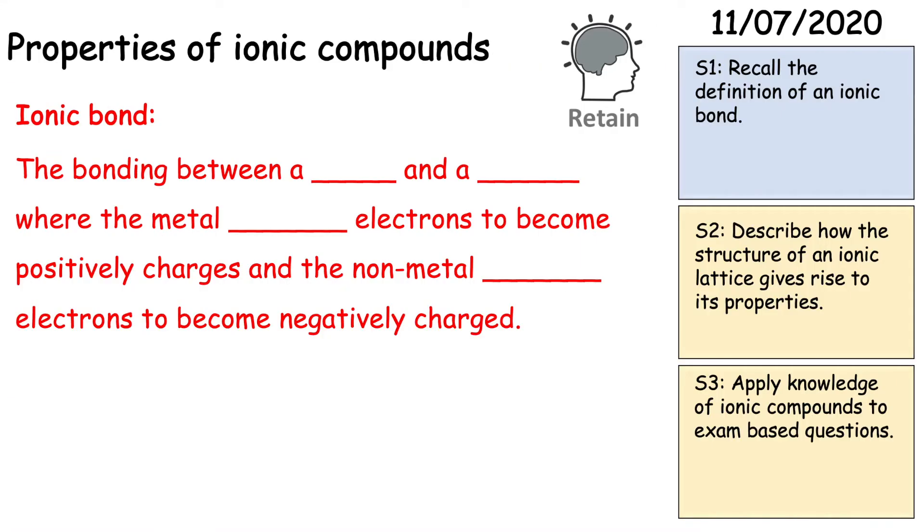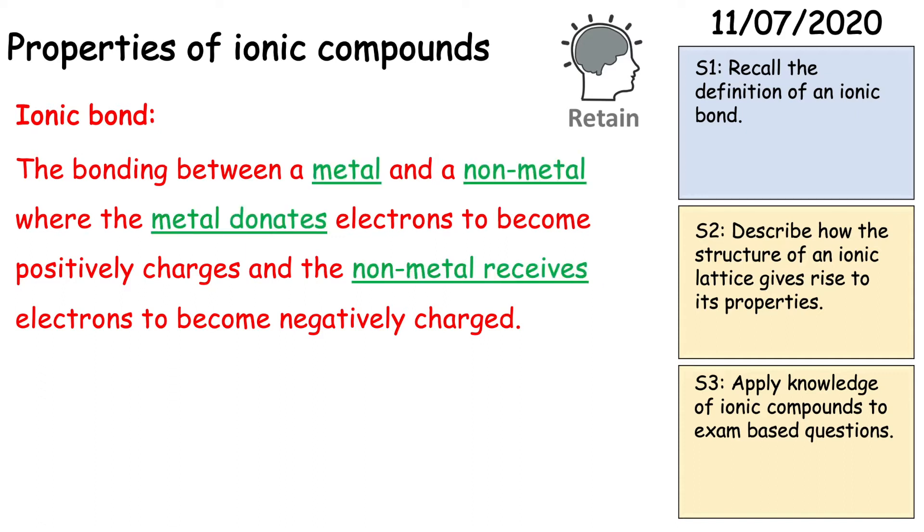Right another recap there. I'd like you to pause the video and try and fill in the blanks and then unpause the video for the answers. Right guys let's go through the answers. Ionic bonding is the bonding between a metal and a non-metal where the metal donates its electrons to become positive and the non-metal receives electrons to become negatively charged. And that's effectively what ionic bonding is. You should already have that in your notes in the previous video.